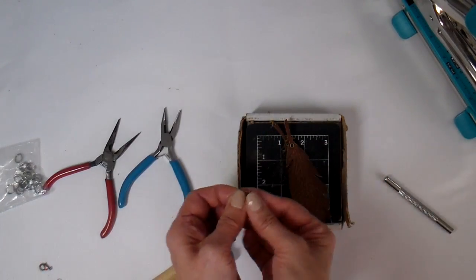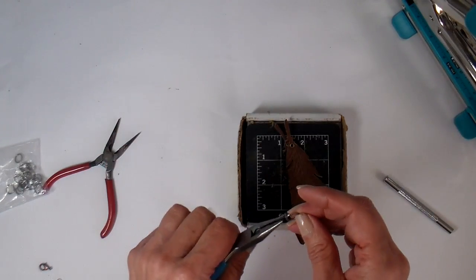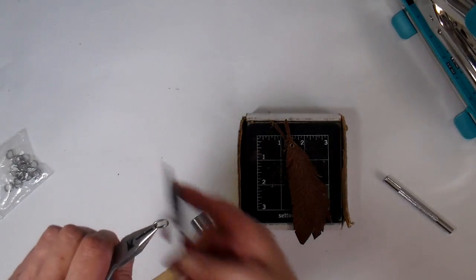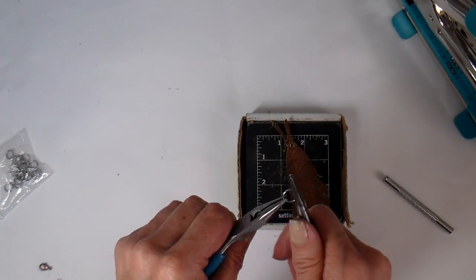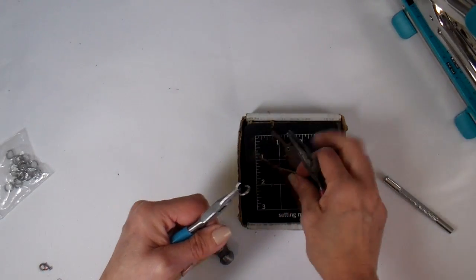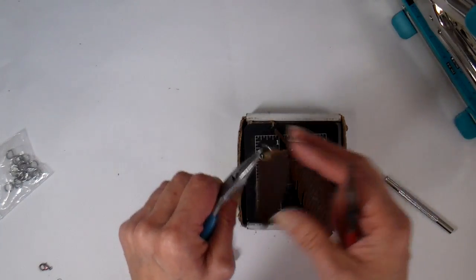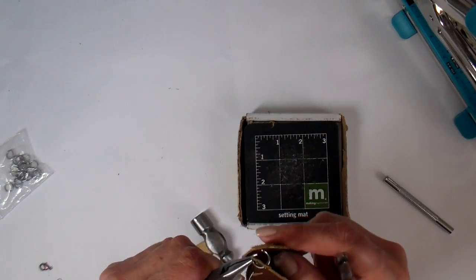I'm using a large jump ring and a couple of pliers to attach the two. One of these feathers is a little bit narrower than the other, so that one's going on top.